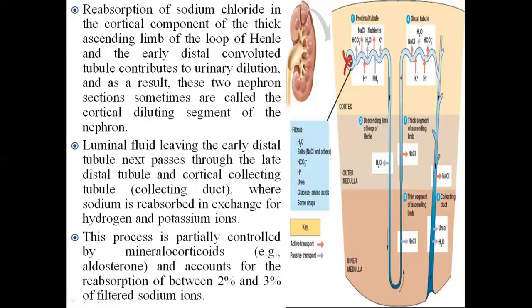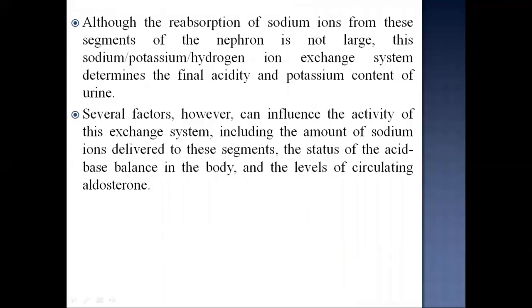Luminal fluid leaving the early distal tubule passes through the late distal tubule and cortical collecting duct, where sodium is reabsorbed in exchange for hydrogen and potassium ions. This process is partially controlled by mineralocorticoids, for example aldosterone, and accounts for reabsorption of 2-3% of filtered sodium. This sodium-potassium-hydrogen ion exchange system determines the final acidity and potassium content of urine, influenced by sodium delivery to these segments, acid-base balance, and circulating aldosterone levels.